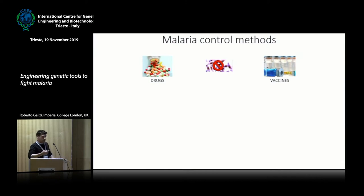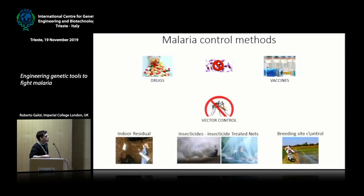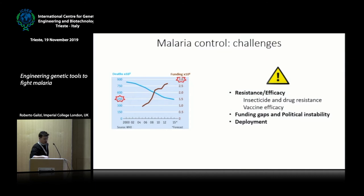Malaria control methods, as we know, include drugs and vaccines that aim to control the parasite infection, and vector control measures like insecticide spraying, insecticide-treated bed nets, or breeding site controls. And they did work — you can see here they've achieved some good results.